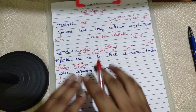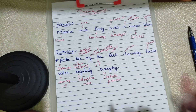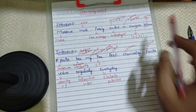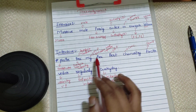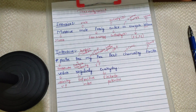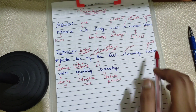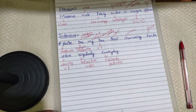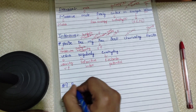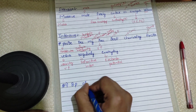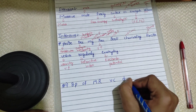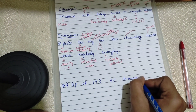So you can remember extensive and intensive properties by just two sentences: 'Massive mole freely enters in energetic volcano' and 'Please see my free best chemistry trick videos regularly every day.' I also have another trick — BP of MR VC decreases.